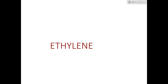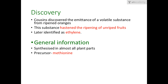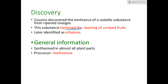Let's start with ethylene. As usual, we'll start with the discovery. Ethylene was discovered by Cousins — that is the name of the person who discovered it. He discovered the emission of a volatile substance from ripened oranges, and found that this substance hastened the ripening of unripened fruits. It was later known as ethylene.